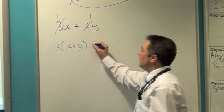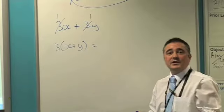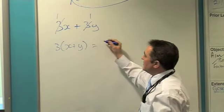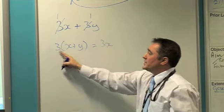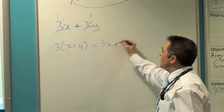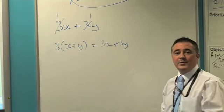If we want to prove it, let's just expand our brackets again. 3 times x will give me 3x. 3 times a positive y, positive 3y. Nice and easy.